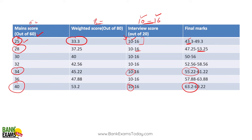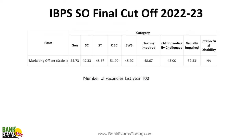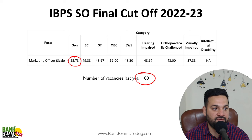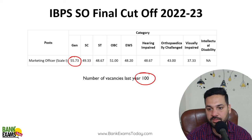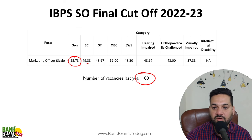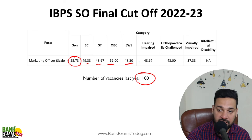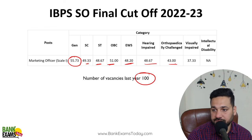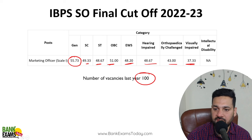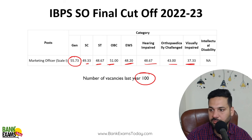So you can do this basic rough calculation for your own marks very easily. Now look at the previous year's cutoff for Marketing Scale 1: last year the cutoff was 55.73, and there were only 100 vacancies. The category-wise cutoff was: SC 49.33, ST 48.67, OBC 51, EWS 48.20, and Visually Impaired 37.33. Intellectually disabled was not applicable.